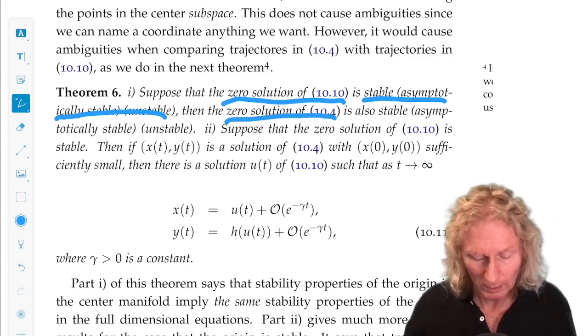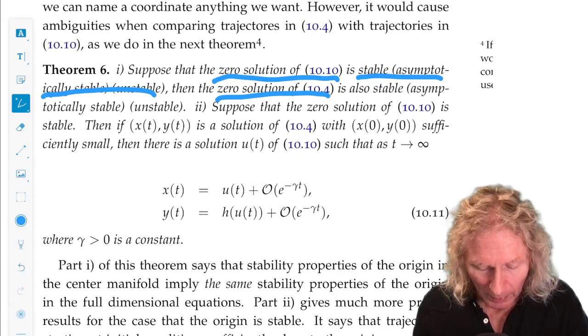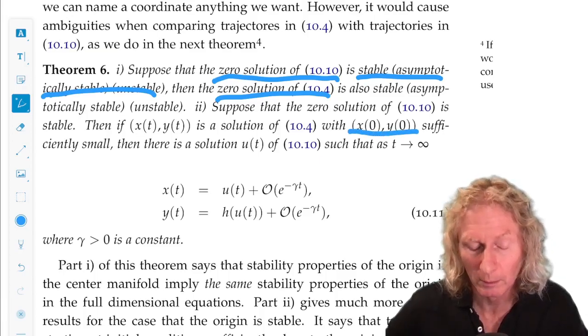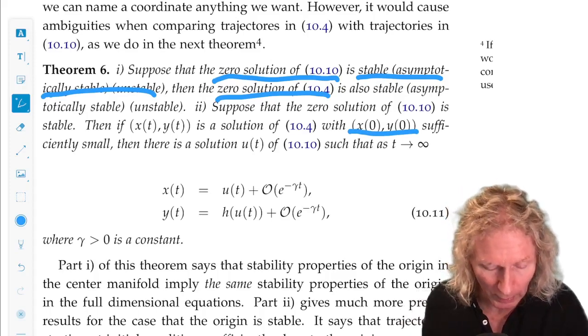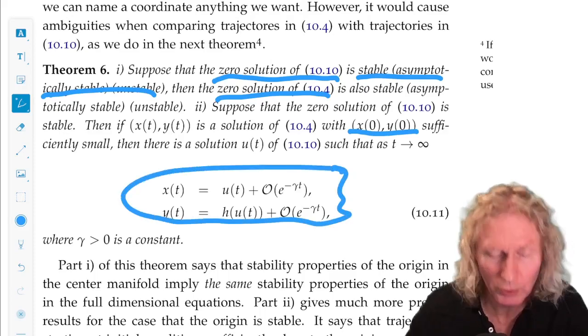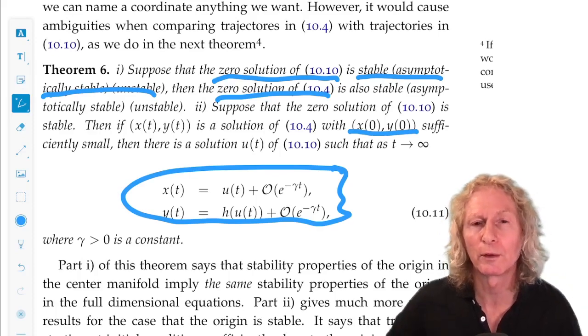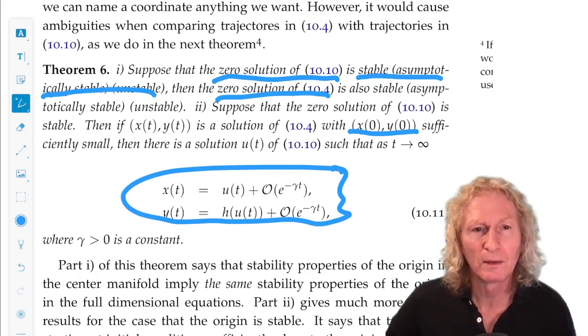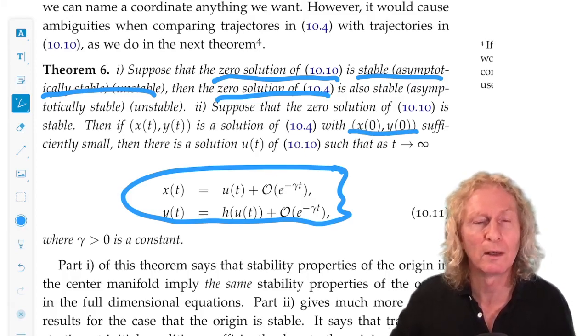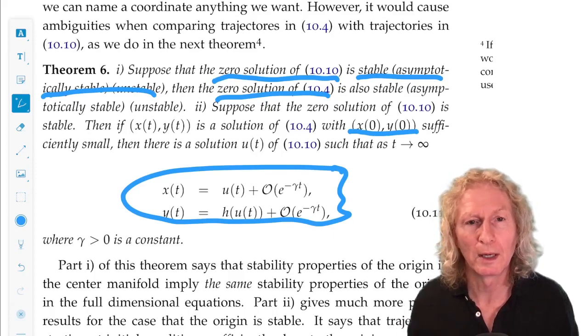But more importantly, or more precisely, this says that if we take an initial condition for the full system, sufficiently close to the origin, it is actually going to decay at an exponential rate to a solution on the center manifold. So, in this sense, the center manifold captures all of the local dynamics. It is a true reduced-dimensional description for the dynamics.